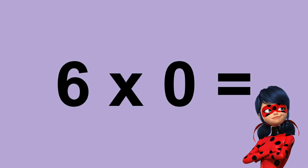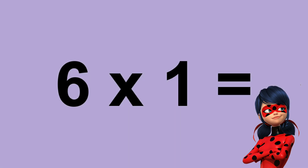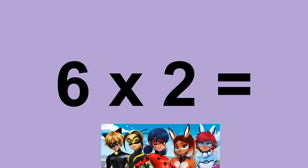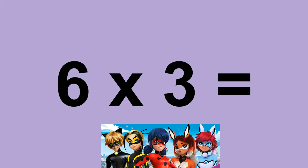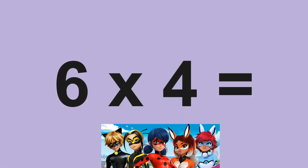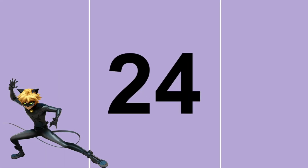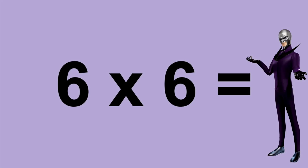Six times zero equals zero. Six times one equals six. Six times two equals twelve. Six times three equals eighteen. Six times four equals twenty-four. Six times five equals thirty. Six times six equals thirty-six.